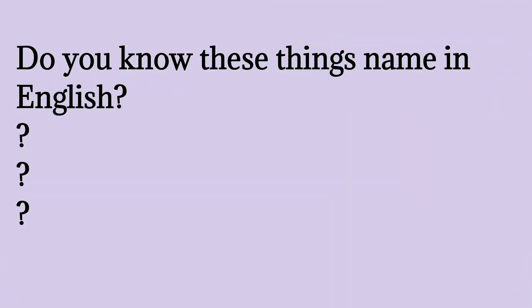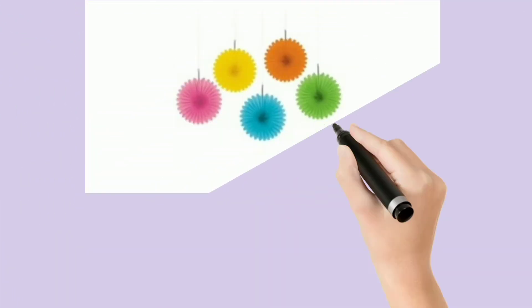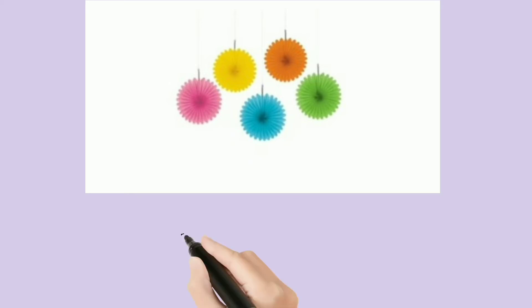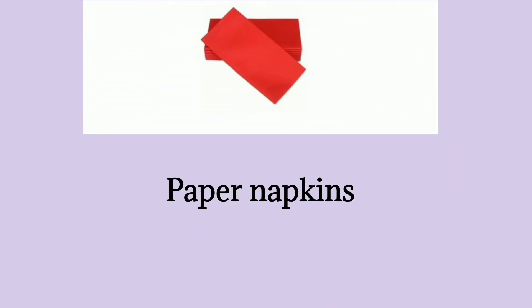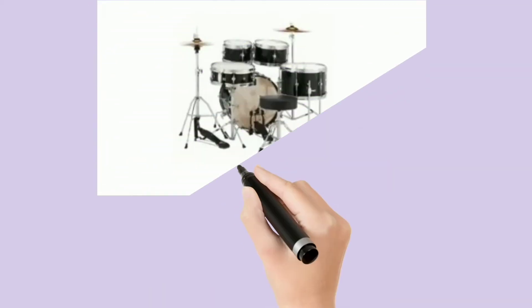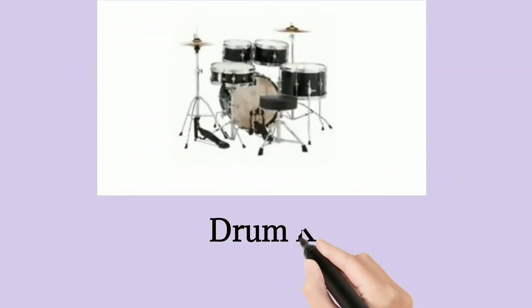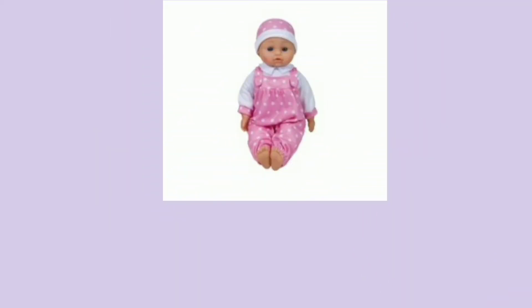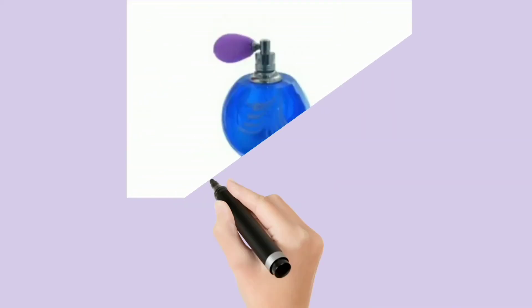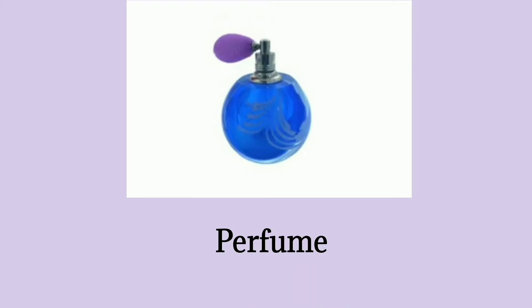Do you know these things' names in English? What is this? Decoration. Paper napkins. Drum kit. Doll. The next one is Perfume.